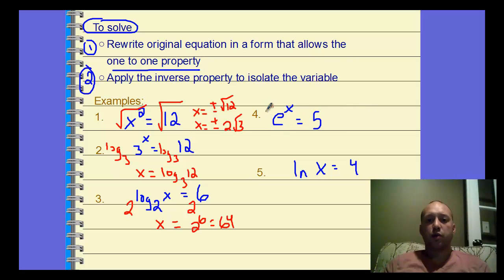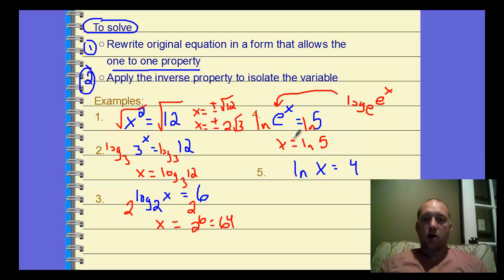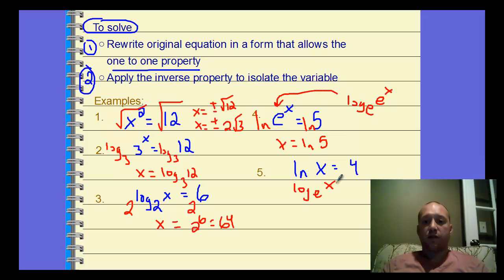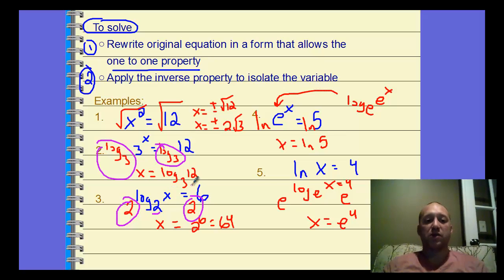For e to the x equals something, we use the natural log — log base e — to both sides. The natural log of e to the x gives x, so x equals the natural log of that value. Conversely, if we start with a natural log: ln of x equals 4, which is log base e of x equals 4. To isolate x, we raise both sides to base e, giving x equals e to the fourth. So if you have an exponent, take the log of the same base to both sides; if you have a log, raise both sides to that base.